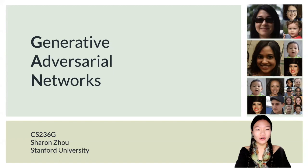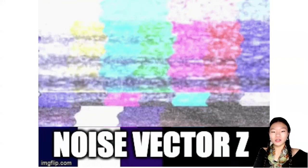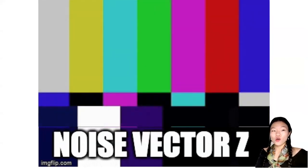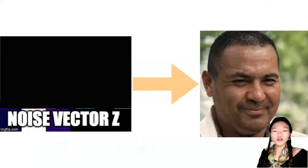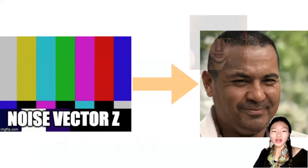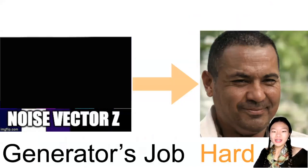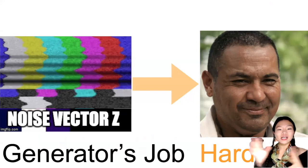GAN is their acronym, and we'll be going over every single word: Generative Adversarial Networks. Your generator learns from a noise vector Z, which is just random values in a vector, and it's expected to generate these really realistic faces that you see here on the right. That's the generator's job, and it is hard — going from pure noise and randomness to something very structured and realistic looking.